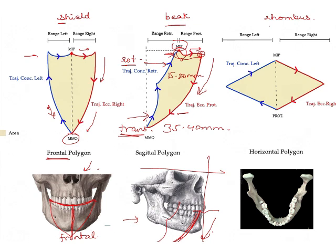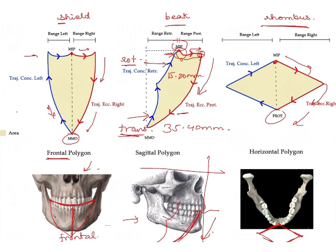Coming to the third view, which is rhombus-shaped in cross-section, from the horizontal plane — when you view it occlusally. This is your maximum intercuspal position. When you move right, the jaw moves toward the right; then when you protrude with the right, it comes like this. Similarly, go left and then protrude. So it becomes a rhombus — this is the occlusal view.